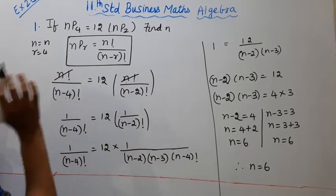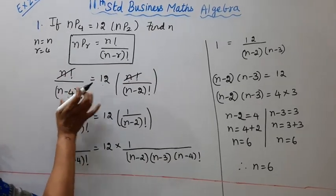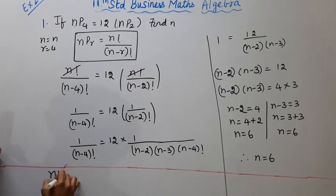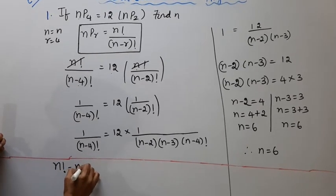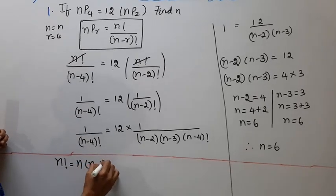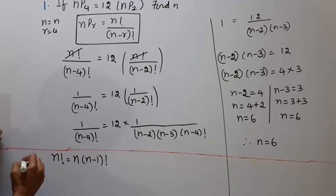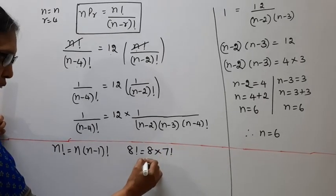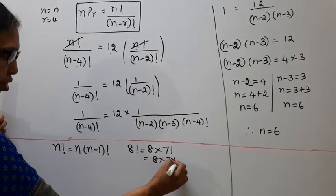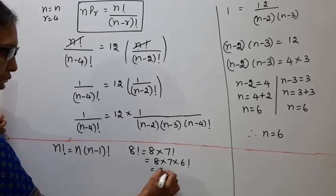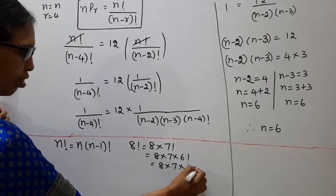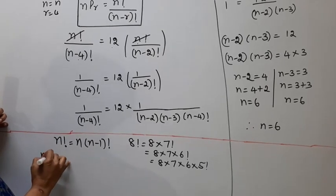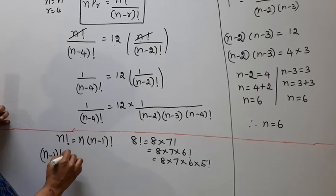Left hand side and right hand side — n factorial cancels. Now n minus 4 factorial and n minus 2 factorial: expanding, n minus 2 factorial equals n minus 2 into n minus 3 into n minus 4 factorial, so n minus 4 factorial cancels.